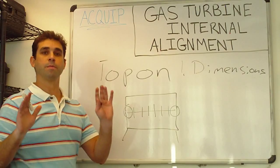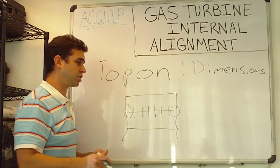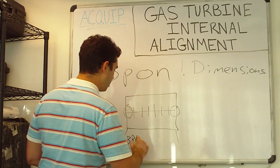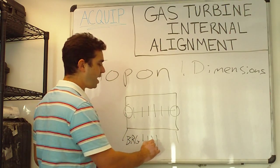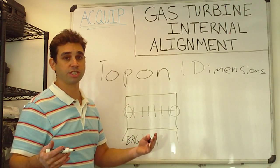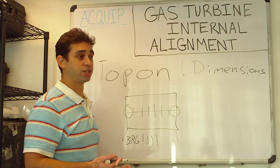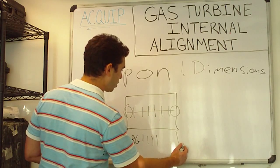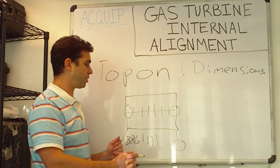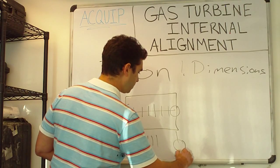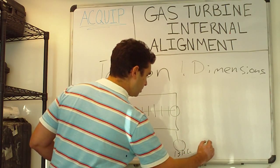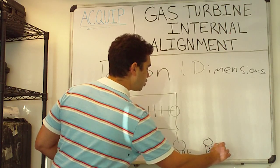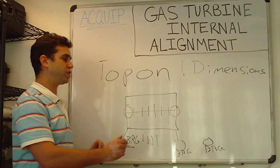We are going to model up turbine axially going from our bearings through any internal components whether it be our compressor section, our exhaust section, a torque tube, any of those internal components going all the way to our next bearing. And then if there's a third bearing, even to that third bearing. So we have our turbine dimensioned up.